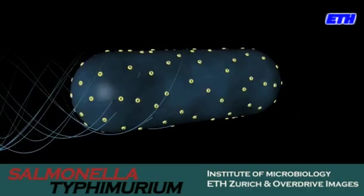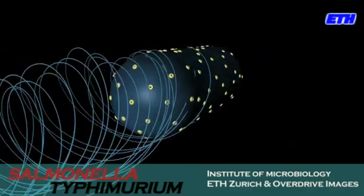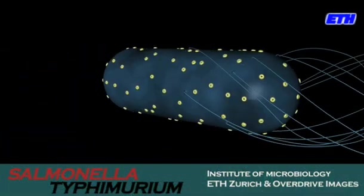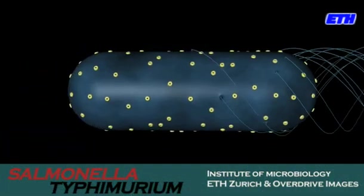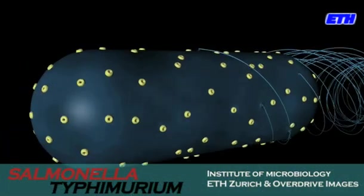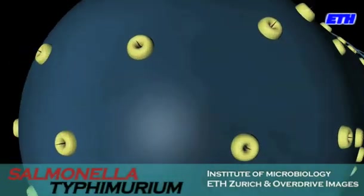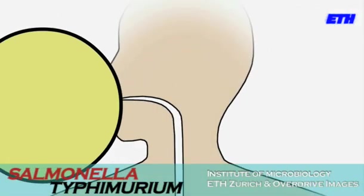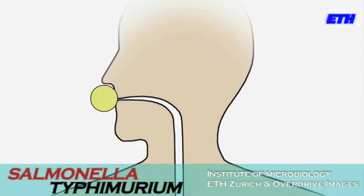Salmonella Typhimurium — a small, rod-shaped bacteria which causes a gut infection well known as Salmonella diarrhea. The infection starts by eating contaminated food or water.